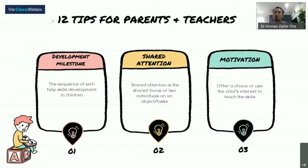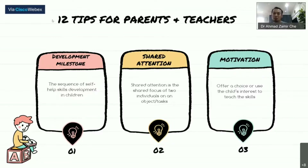The next tip is motivation. How do you improve the motivation of the child? You should offer a choice. For example, when teaching dressing to the child, you can offer an option — which clothes or which style do you want to wear? This will increase the motivation and engagement of the child in the intervention or in improving the self-help skill.